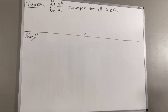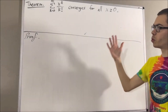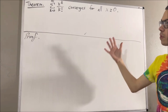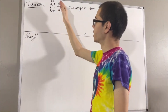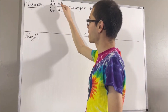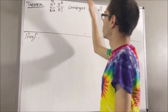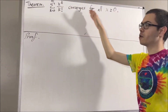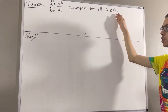Hello! In this video, we are going to prove the following theorem. The infinite series, sum from k equals 0 to infinity of x to the k over k factorial, converges for all real numbers x greater than or equal to 0.